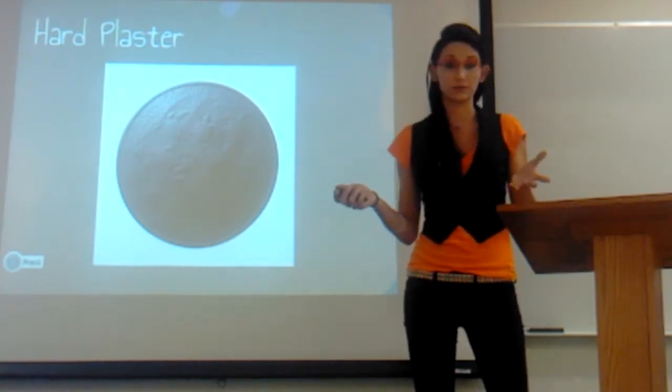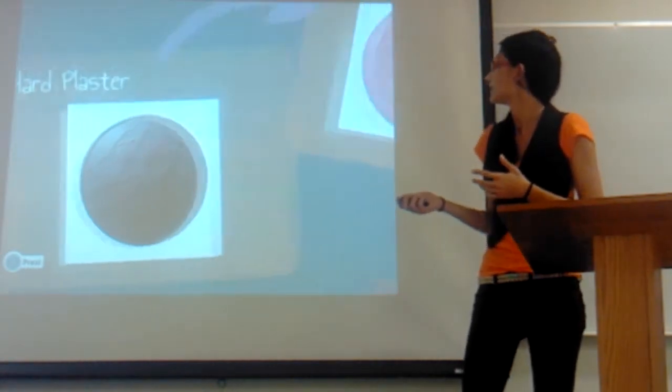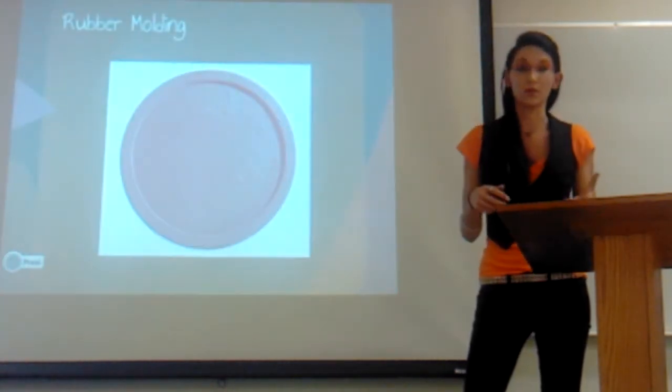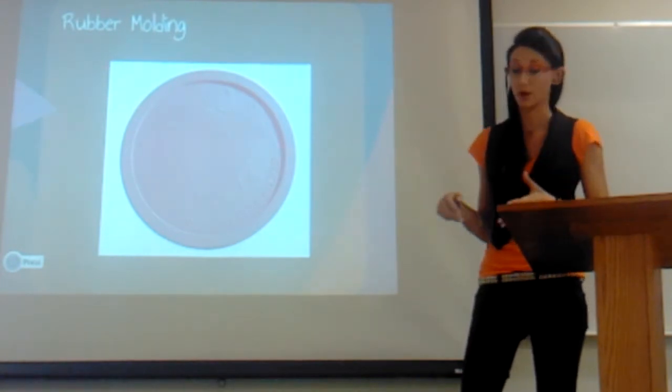Once she's satisfied and the art is approved by the person purchasing it, it's then changed over to a rubber molding. And then all things, copper plate and rubber molding, go downstairs to the machine room.